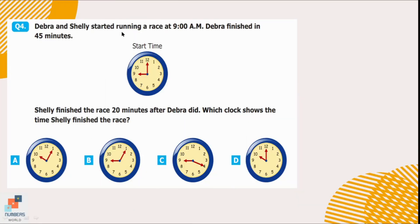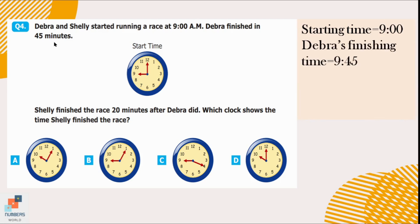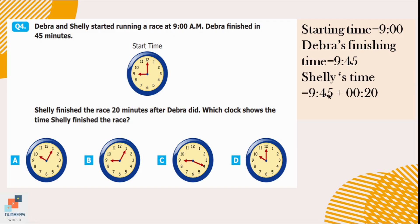Question number 4. Deborah and Shelly started running a race at 9 a.m. Deborah finished in 45 minutes, so her ending time is 9:45. Shelly finished the race 20 minutes after Deborah. So, we add 20 to 9:45 to find Shelly's finishing time, which is 10:05. Looking at all the clocks, 10:05 is represented by the first clock. So, option A is the correct answer.